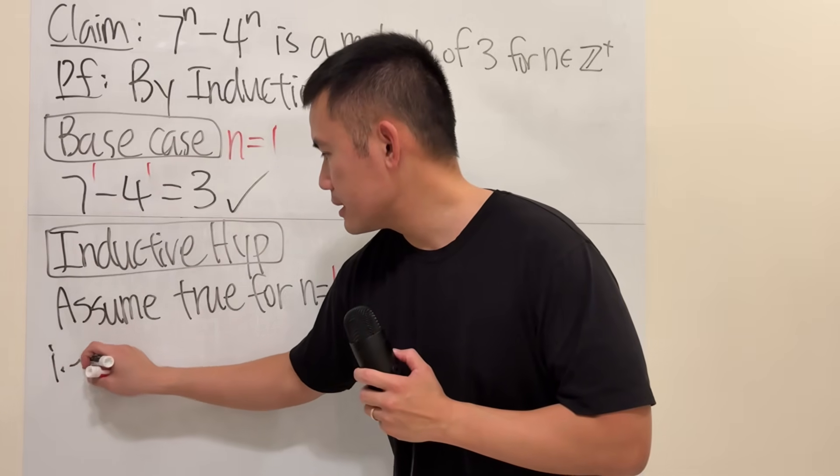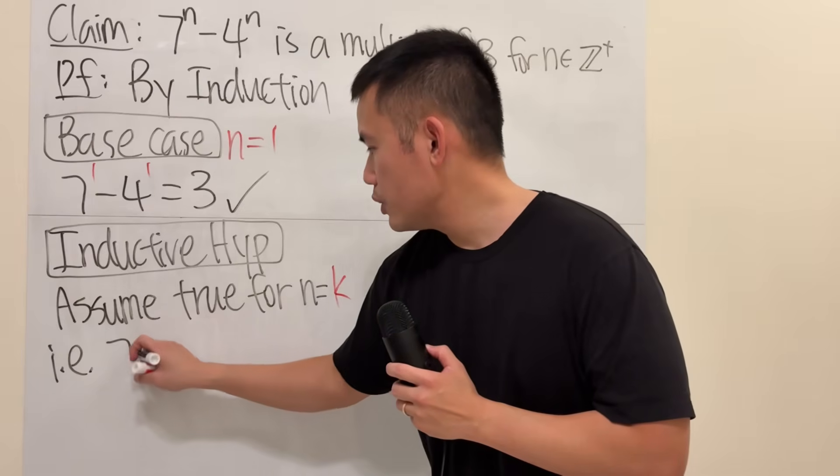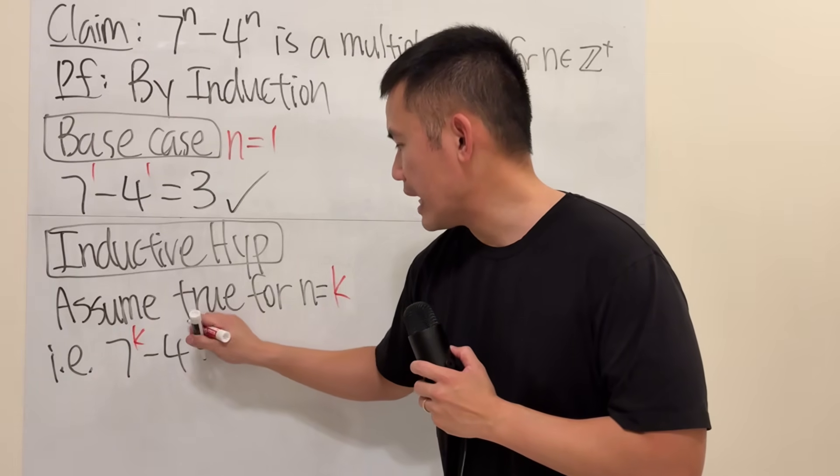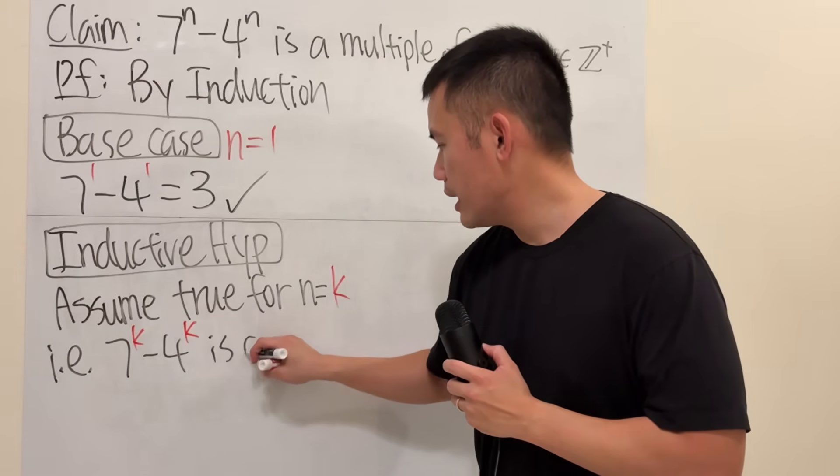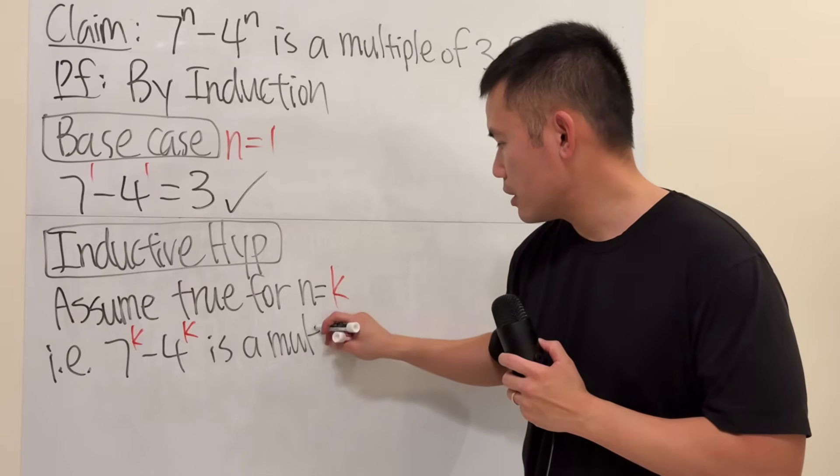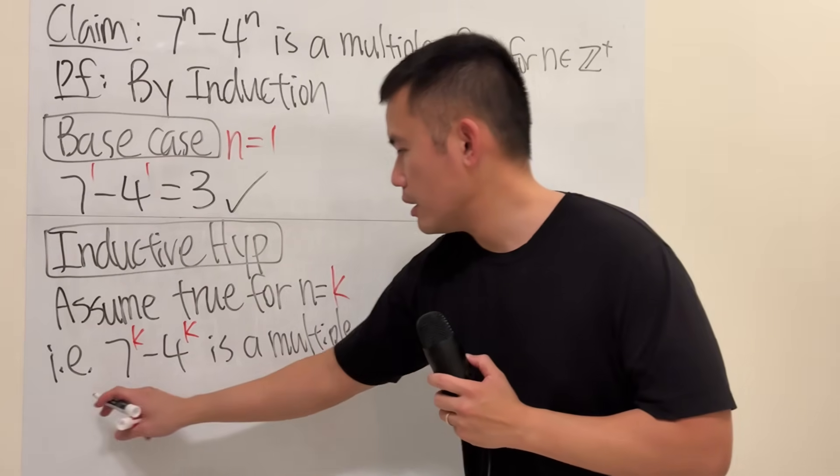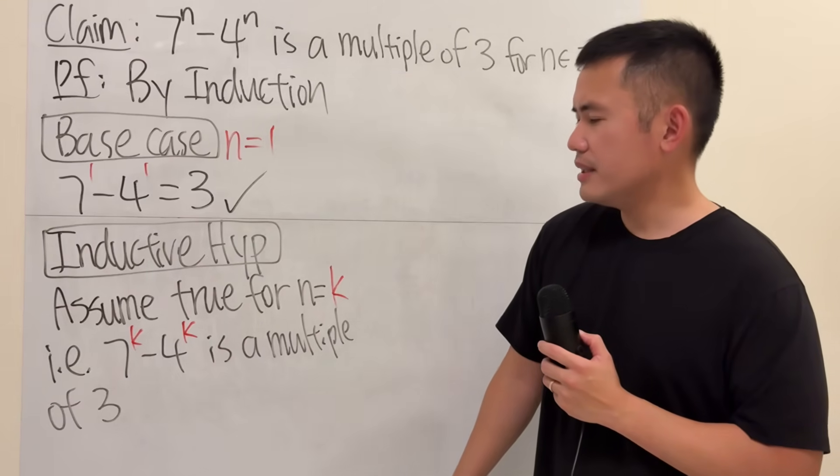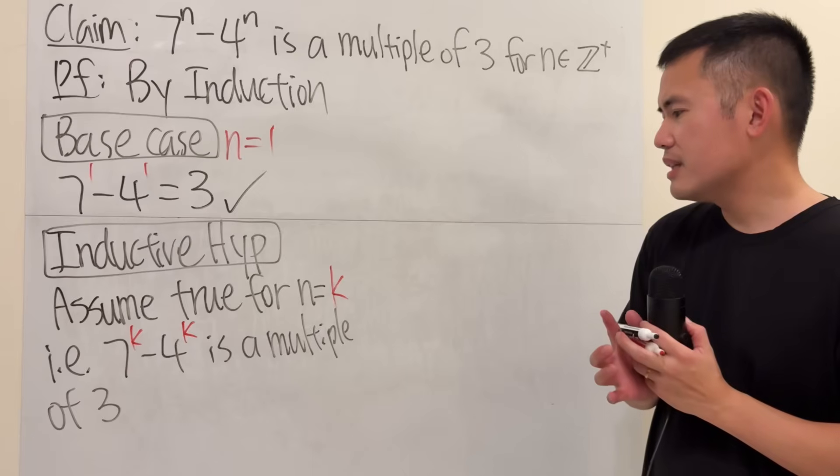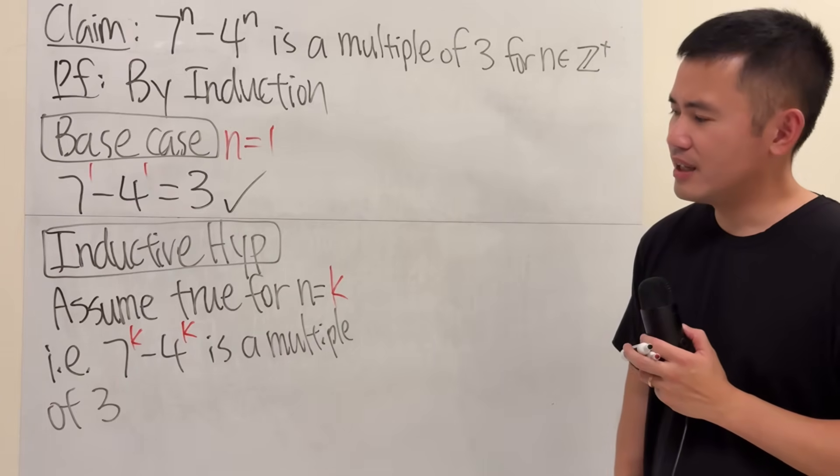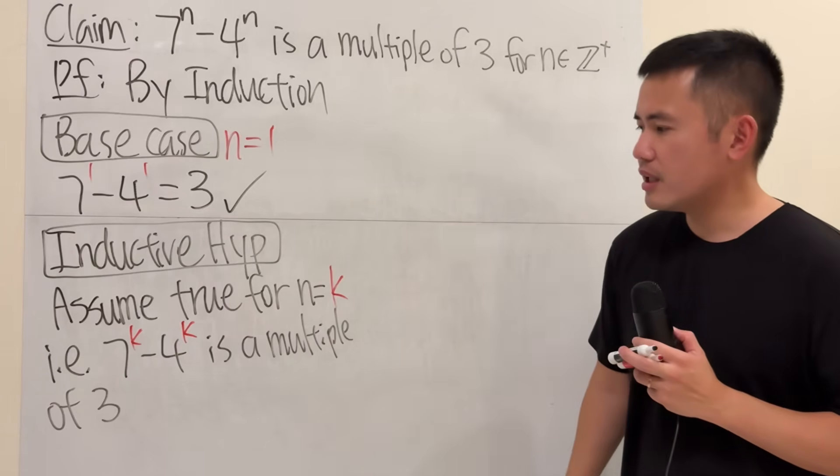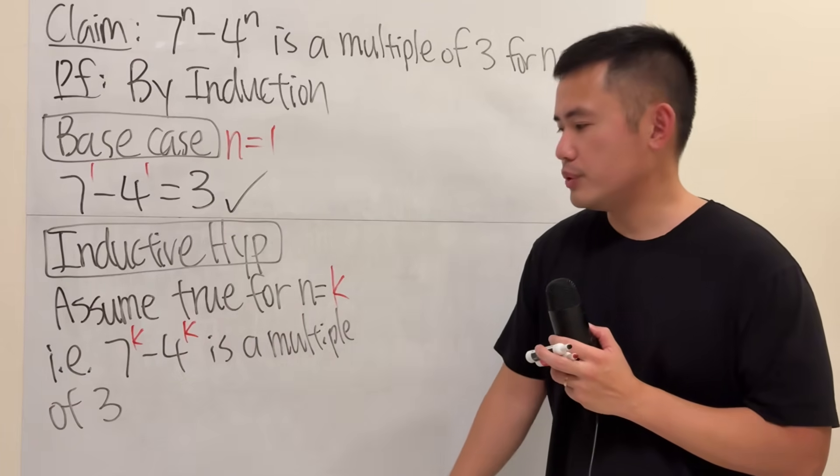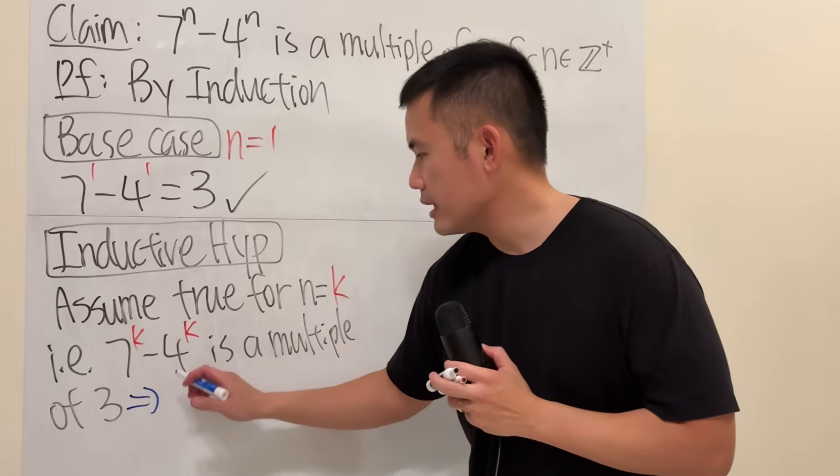And that means 7 to the k minus 4 to the k is a multiple of 3. And here's what we can do. Because this right here is like a sentence, we don't like it. We like to write it with equations. If something is a multiple of 3, that means we can write this.